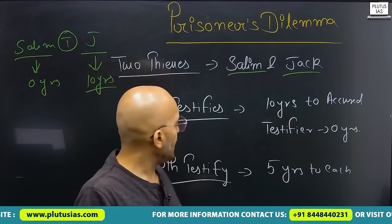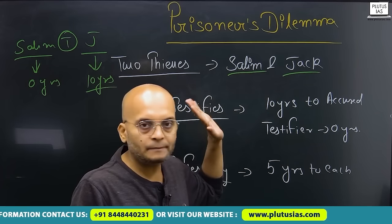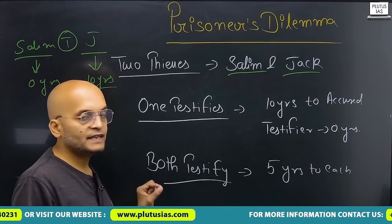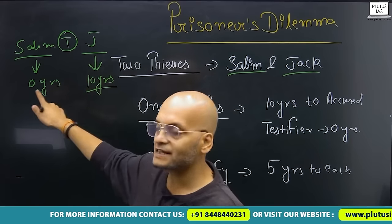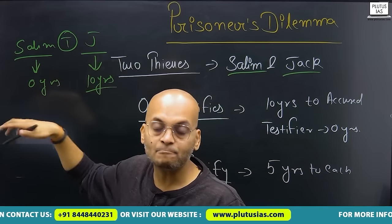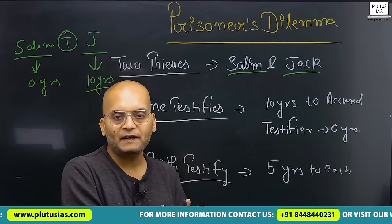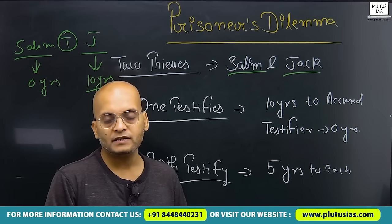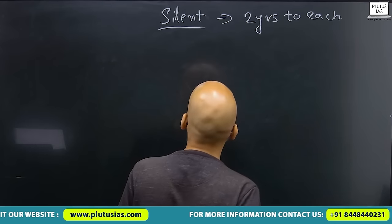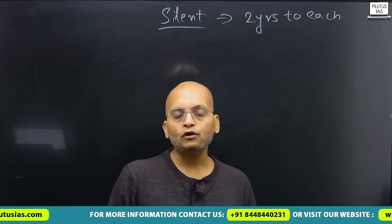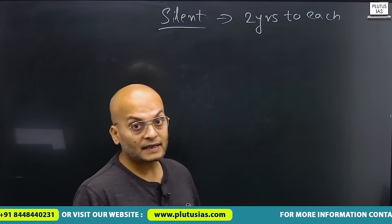That vice versa is also true — if one of the two testifies against the other. Now another condition is that if both of them testify against each other — Salim testifies against Jack and Jack testifies against Salim — then both will get five years each in prison. And another condition: if both Salim and Jack prefer to remain silent — no one testifies against the other — then each of them will spend two years in prison.